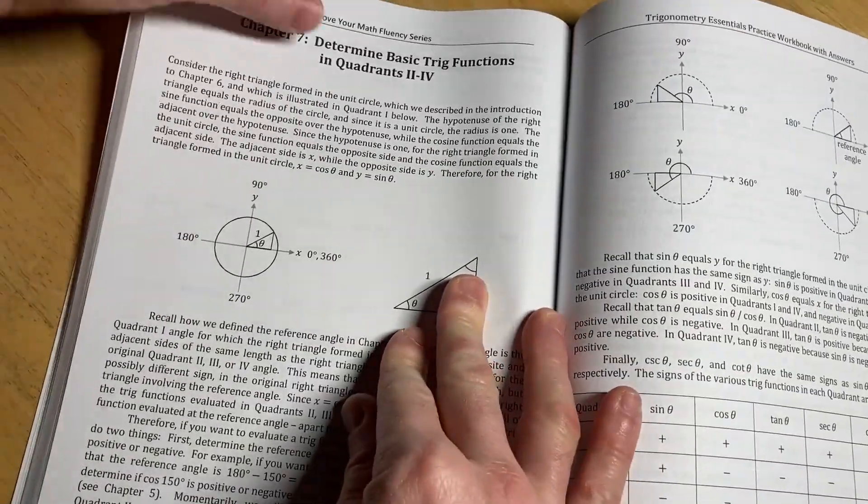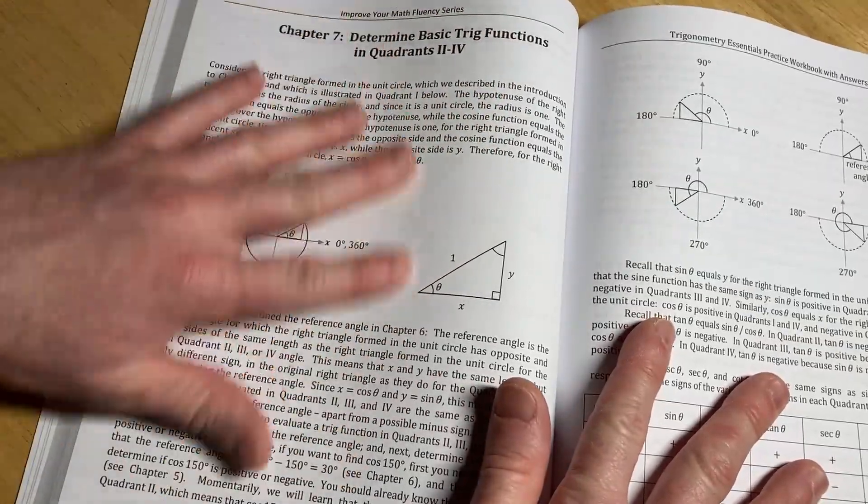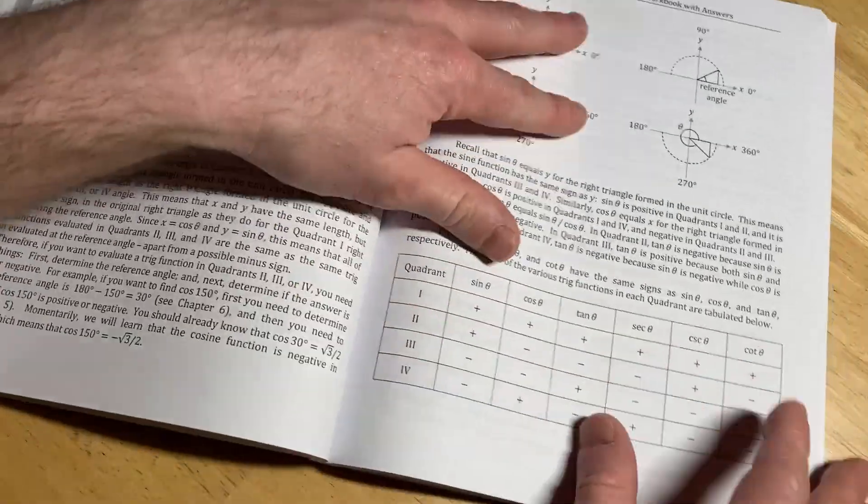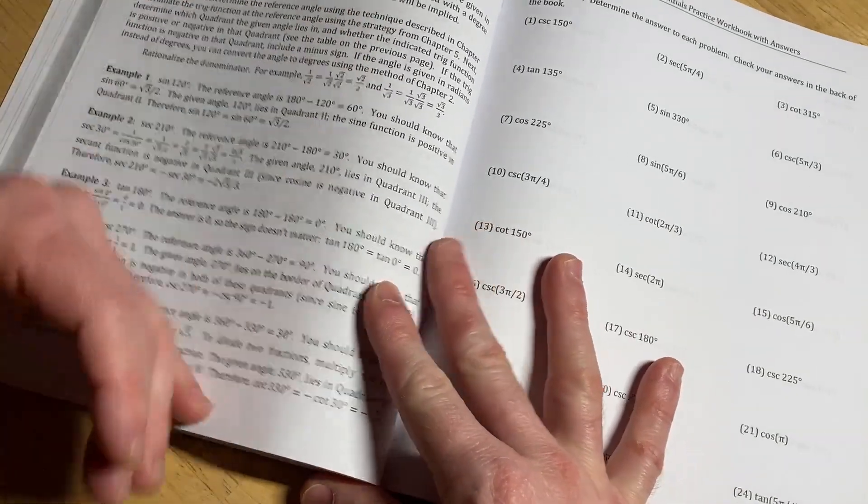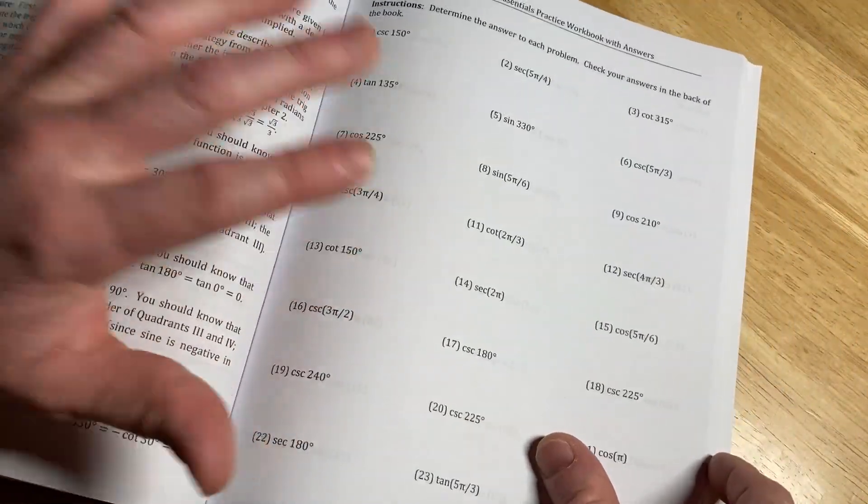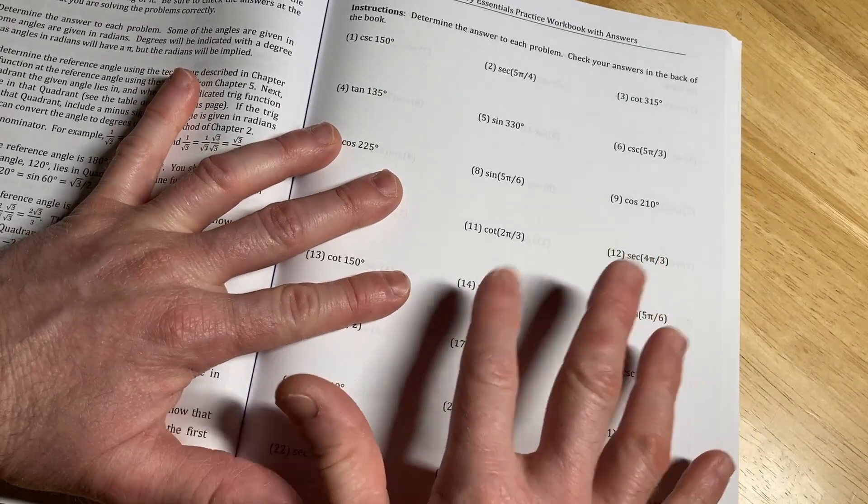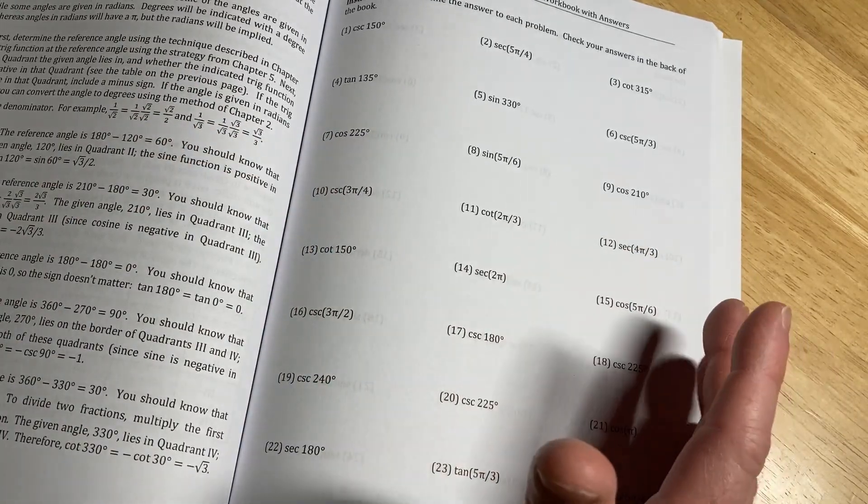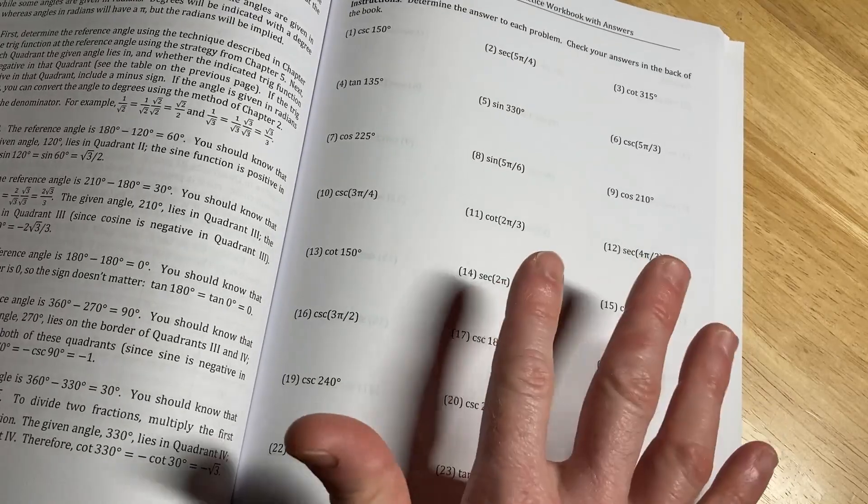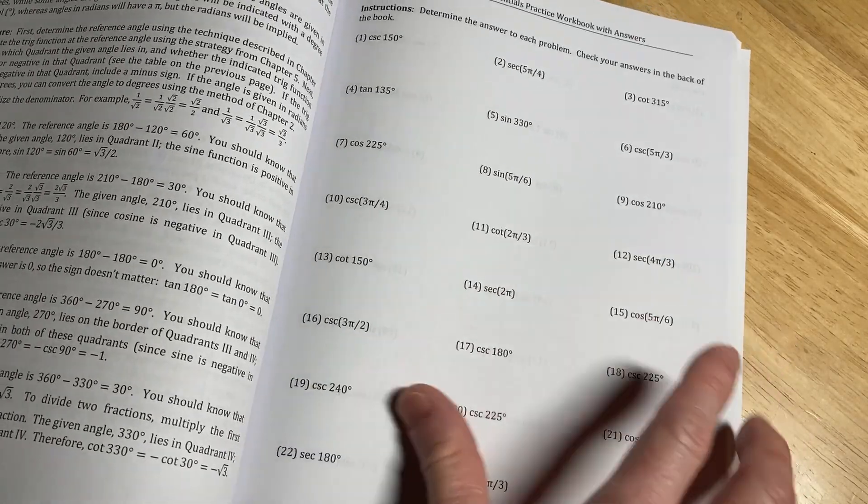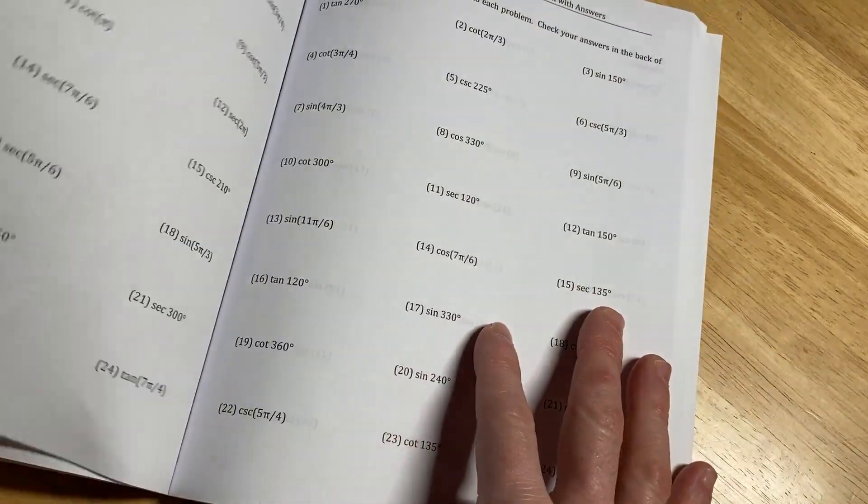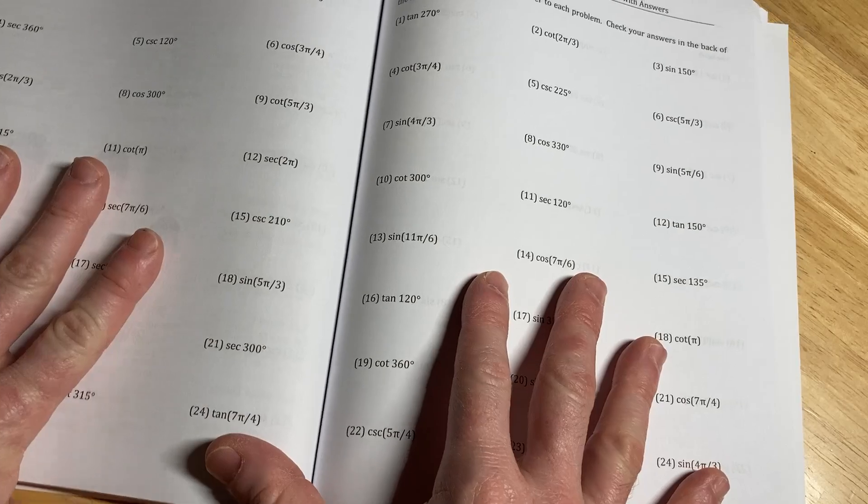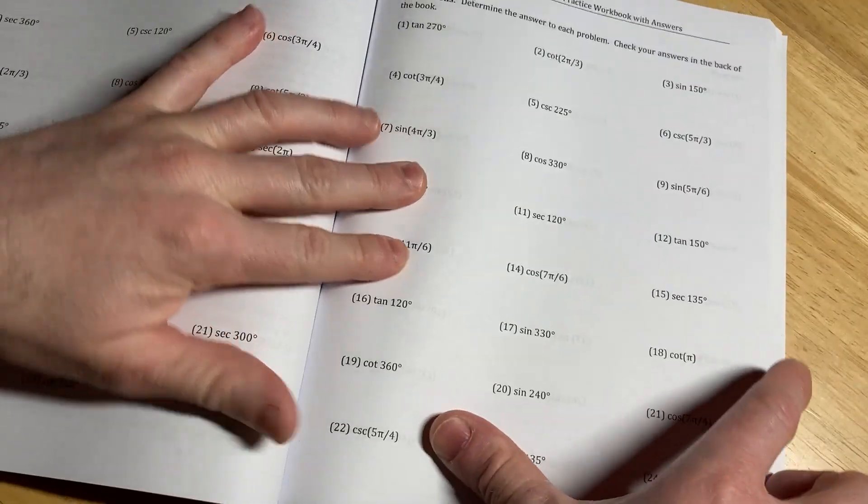And then we're getting to the meat here. This is the most important. Determine basic trig functions in quadrants two through four. So here you can see that there's more text in the book. It's a lot more reading. That's because he's trying to explain things. Some more examples here. And then here you have these exercises. These take more work. And this is where people really struggle. Because it's really easy to just reach for a calculator. And you don't want to use a calculator for this. You want to be able to do this without a calculator. It's very important to be able to do it without a calculator. This is basic trig. And if you master this, I feel like everything else after this is relatively simple.